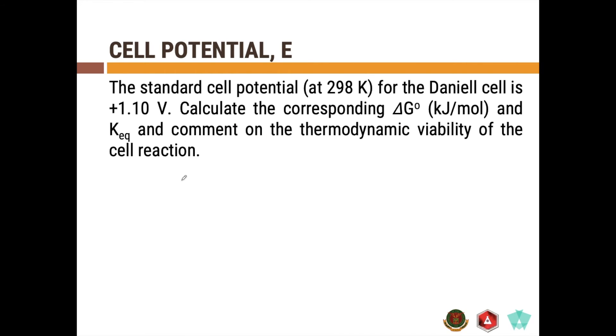In order to calculate for the delta G of the reaction, we need to use the formula ΔG = -nFEcell. 2 mole electrons per mole reaction. Then you have the Faraday's constant 96,485 Coulomb per mole times the cell potential which is 1.1 volts.